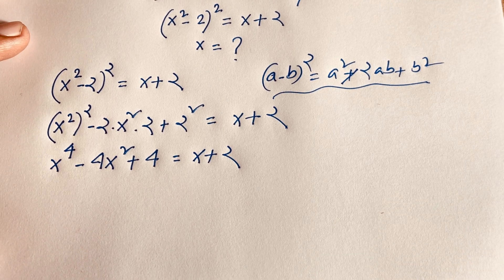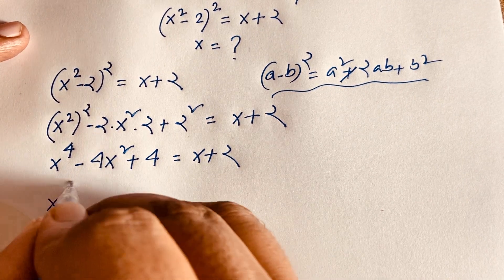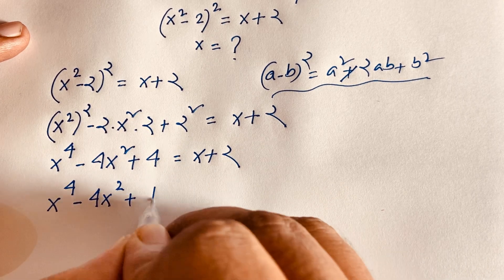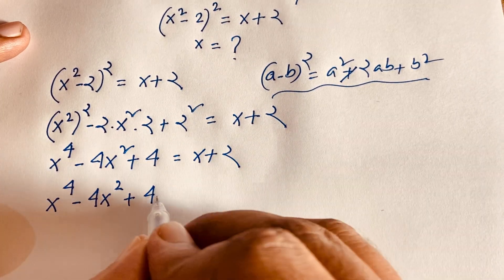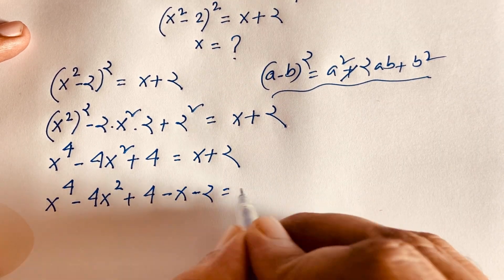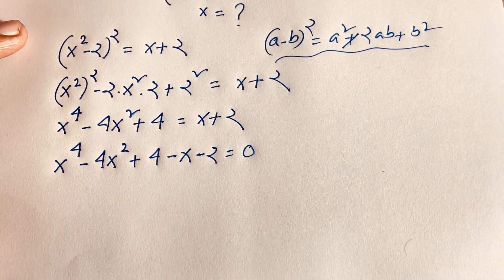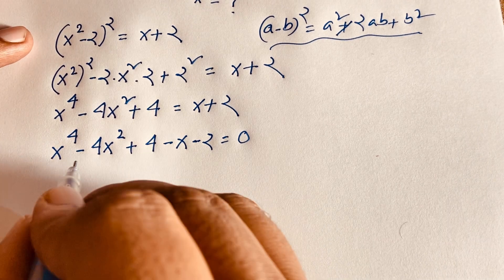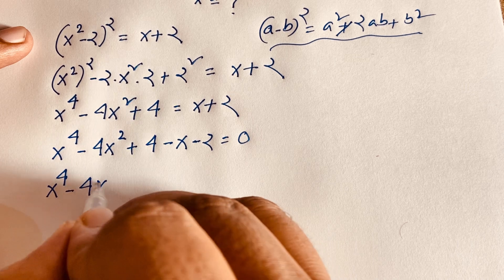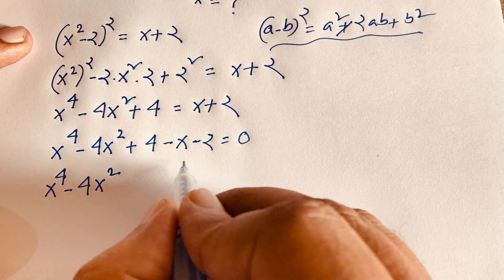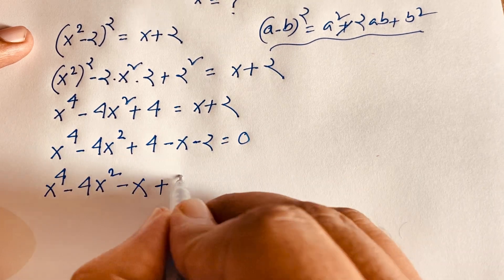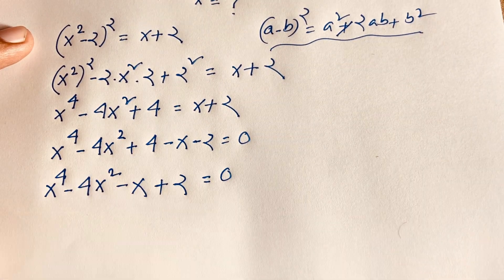Then we have x⁴ - 4x² + 4. Moving x and 2 to the left side gives us negative x and negative 2, so: x⁴ - 4x² - x + 4 - 2 = 0, which simplifies to x⁴ - 4x² - x + 2 = 0.